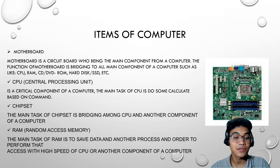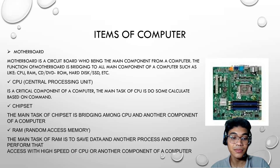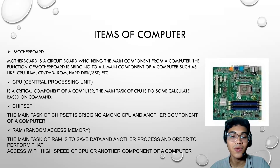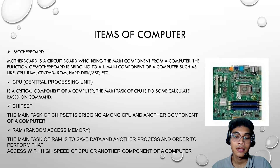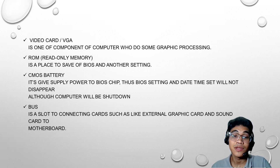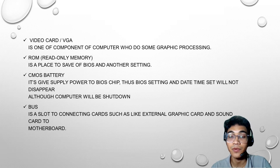And the next one, we have random access memory, or RAM. The function of RAM is to save data and processes in order to perform fast access with high speeds for the CPU and other components of a computer. And the next one, we have a video card, which is a component of a computer that does graphics processing.